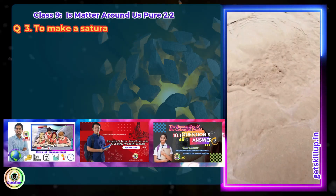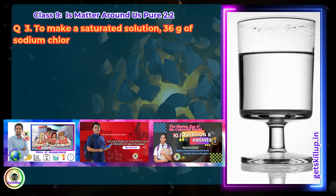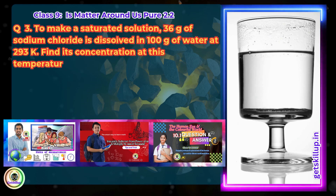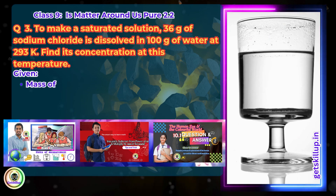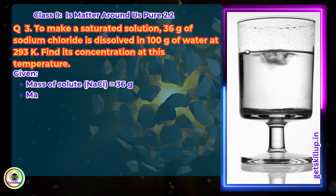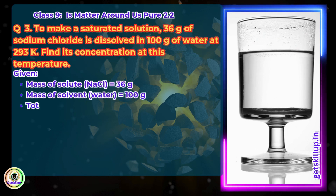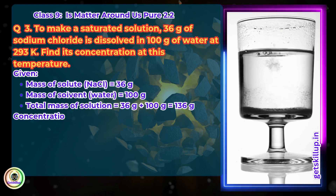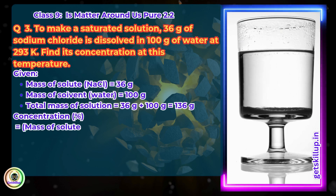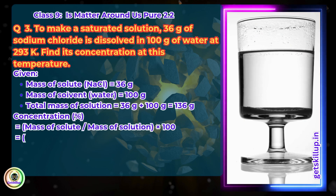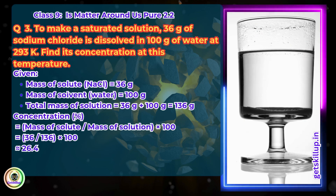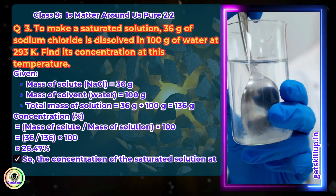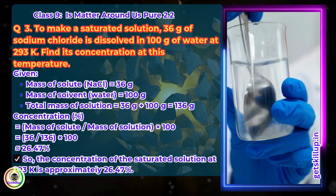Question 3: To make a saturated solution, 36 grams of sodium chloride is dissolved in 100 grams of water at 293 kelvin. Find its concentration at this temperature. Given: mass of solute (NaCl) = 36 g, mass of solvent (water) = 100 g, total mass of solution = 136 g. Concentration = (mass of solute / mass of solution) × 100 = (36 / 136) × 100 = 26.47%. So the concentration of the saturated solution at 293 kelvin is approximately 26.47%.